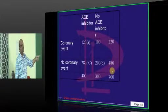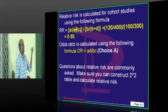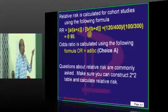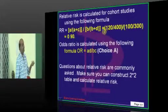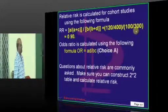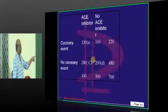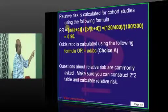Then you get the values A, B, C, D. Then you must know the formula. Relative risk is A/(A+C) divided by B/(B+D). That makes it 120/400 divided by 100/300. If you know how to put it and the formula for relative risk...